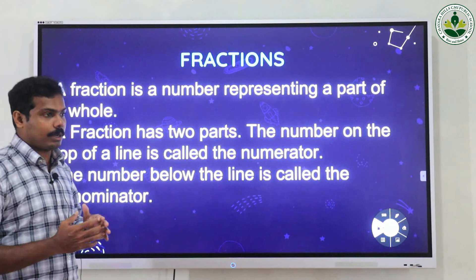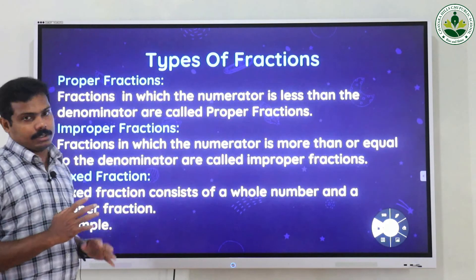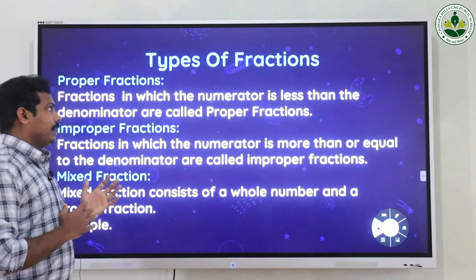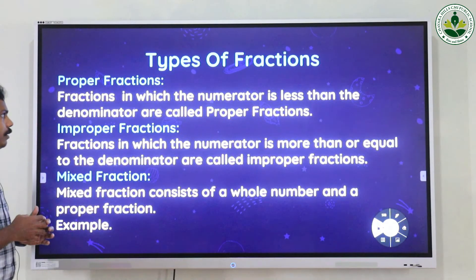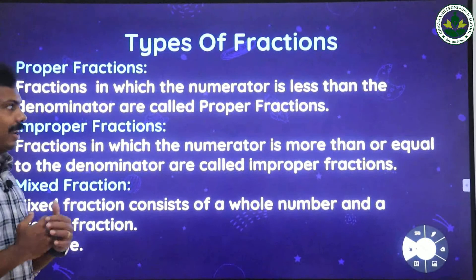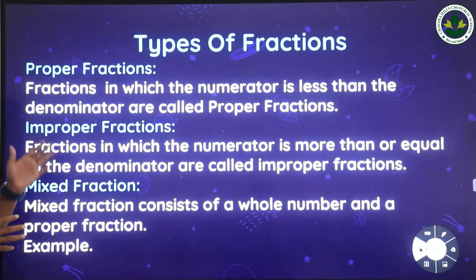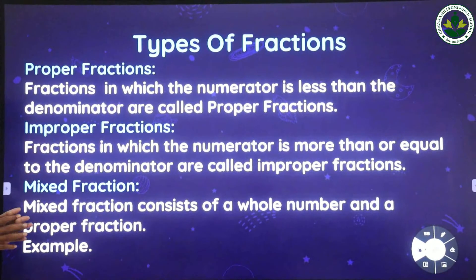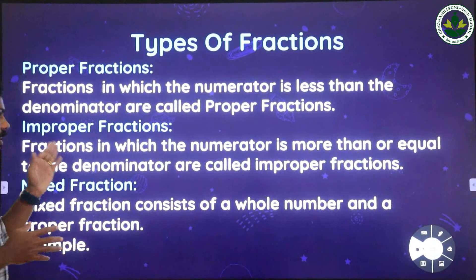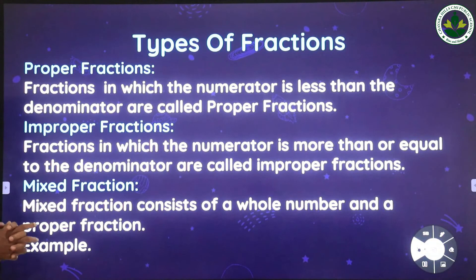There are mainly three types of fractions. The first one is a proper fraction — fractions in which the numerator is less than the denominator are called proper fractions. An improper fraction means fractions in which the numerator is more than or equal to the denominator.